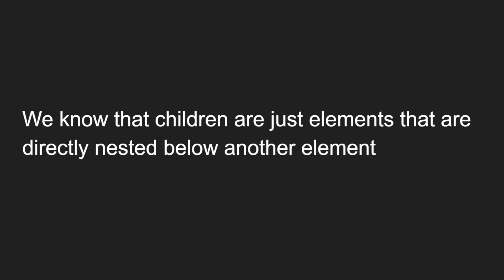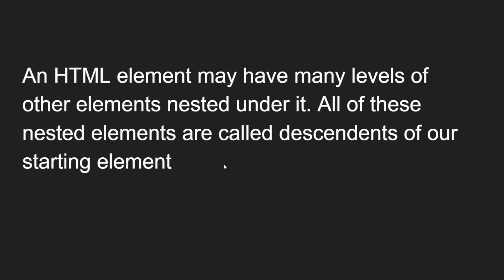We know that children are just elements that are directly nested below another element. We have a parent and directly nested elements are called children. An HTML element may have many levels of other elements nested under it. All of these nested elements are called descendants of our starting element. So normally any HTML element will have direct children, and those children have again another nested children — those are called descendants.